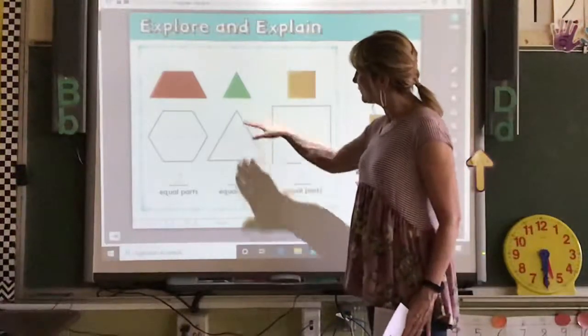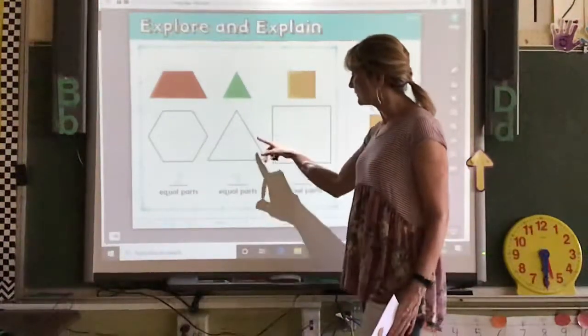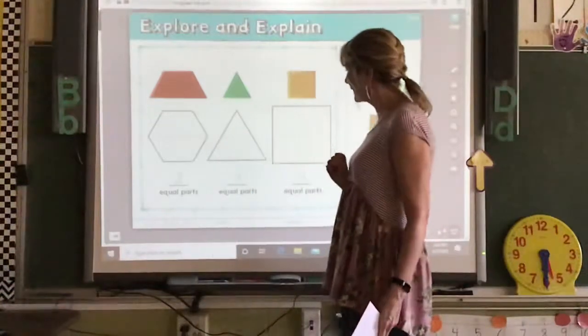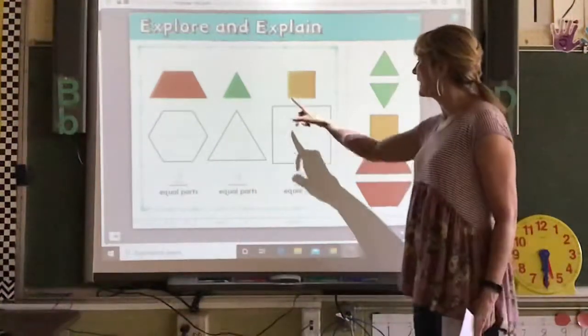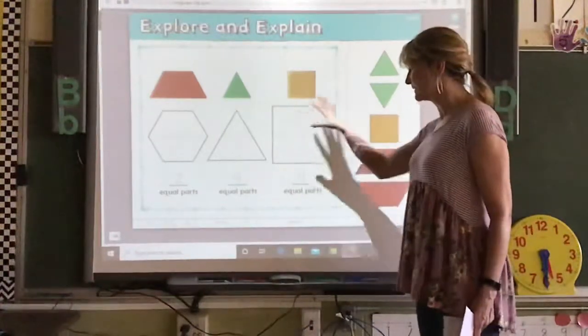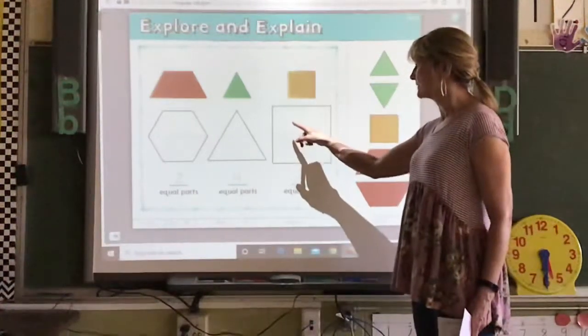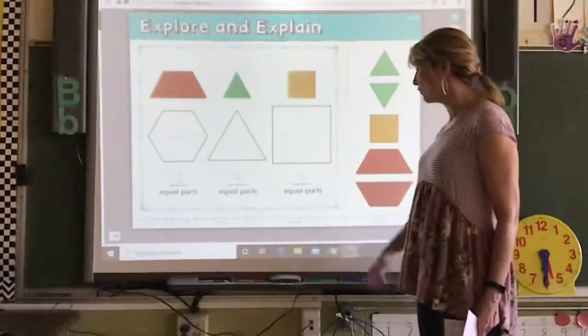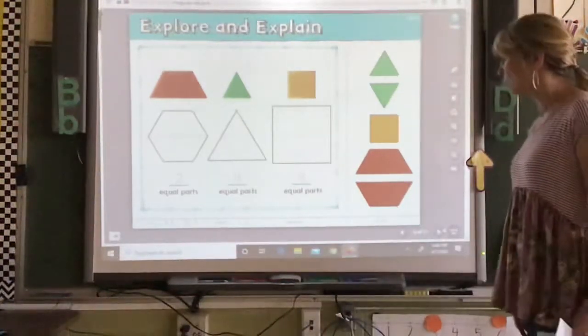On your big triangle, it took four of them. So that's one, two, three, four equal parts. And they used four small squares to make a big square, and their sizes are the same. One, two, three, four. Four equal parts.